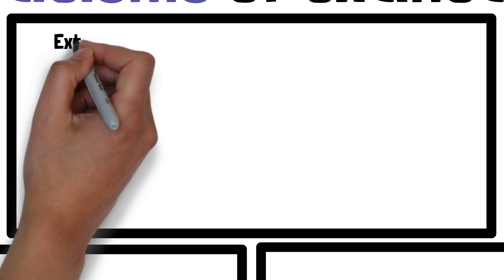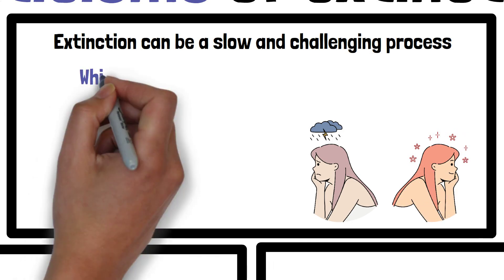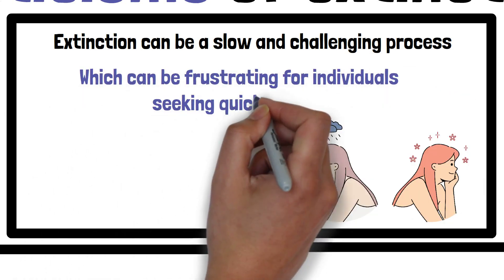Now let's explore three criticisms of extinction. First, extinction can be a slow and challenging process. In many cases, the unwanted behavior may persist for a long time before it finally extinguishes, which can be frustrating for individuals seeking quick results.